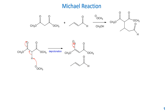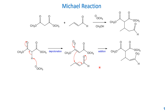This enolate can react with the Michael acceptor, the alpha-beta unsaturated carbonyl compound — here, this is an aldehyde. Push the electron from this oxygen to form the pi bond, and push this pi electron to attack this beta carbon, so the beta carbon is electrophilic. Then push the pi electron here to form the double bond, and push the carbonyl pi bond to the oxygen. This is a nucleophilic addition.